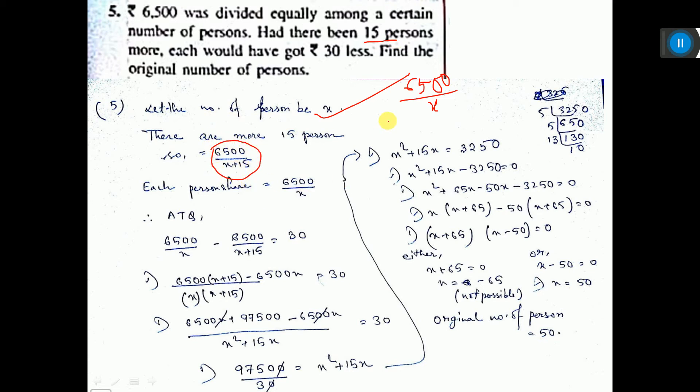Now, if you subtract these two, this minus this, then it will be 30, because here it is written 30. So this equals 30.